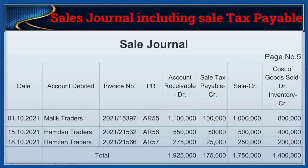Sales journal including sales tax payable: this sales journal shows that the seller is collecting a sales tax at the rate of 10% on all goods sold to customers. The posting procedure is similar to the simple sales journal example. A sales tax payable account is opened in the general ledger, and the total of the sales tax payable column is credited to that account at the end of each month or another appropriate period.